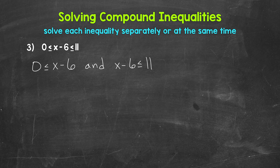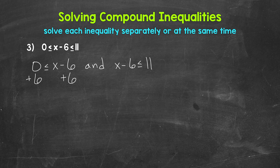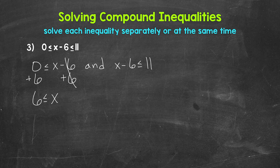Starting with 0 is less than or equal to X minus 6 — we need to isolate X by undoing the subtraction with addition. Adding 6 to both sides, the 6s on the right cancel out, and 0 plus 6 gives us 6. So we have 6 is less than or equal to X, or equivalently, X is greater than or equal to 6.